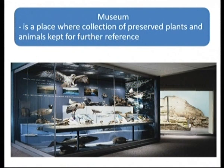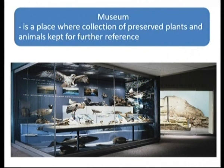A museum is a place where collections of preserved plants and animals are kept for further reference. The difference between museum, botanical garden, and zoo is: in a museum we have preserved plants and animals; in botanical gardens we have living plants; and in zoos we have living animals.